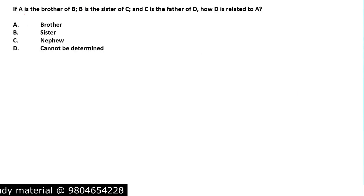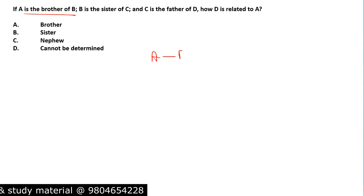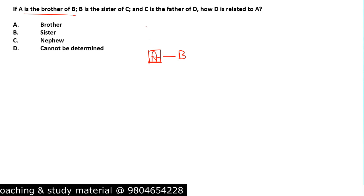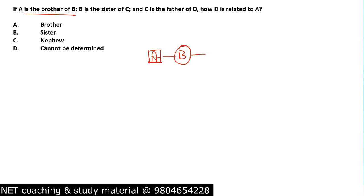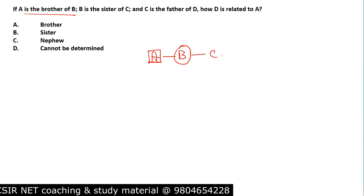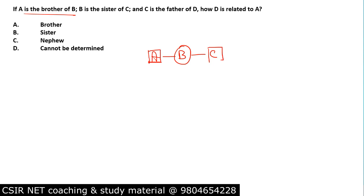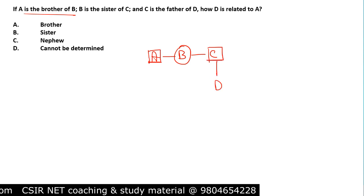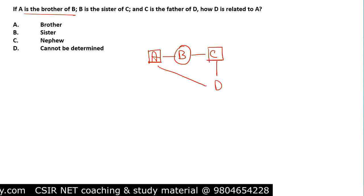Moving to the second question: if A is a brother of B — so A and B belong to the same lineage and A is male. We use boxes for male and circles for female. B is the sister of C, and C is the father of D — C is male. How is D related to A?